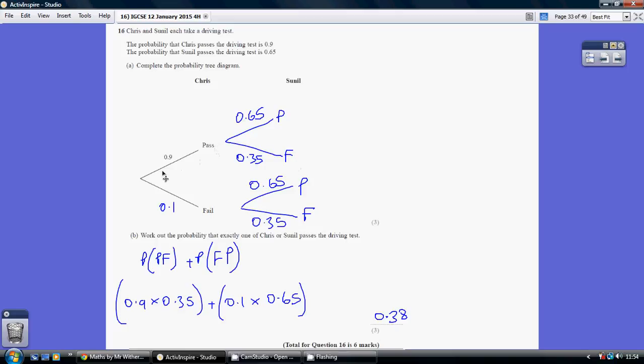so either Chris passes and Sunhill fails, that's the pass-fail option. The passing is 0.9 for Chris, Sunhill failing is 0.35. Now, it's Chris passing and Sunhill failing - it's an 'and', so we multiply those two decimals together.